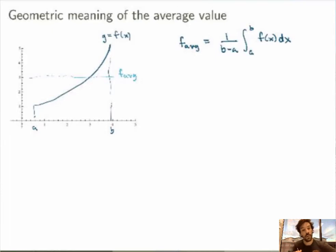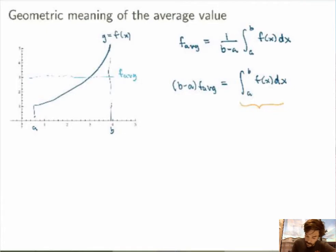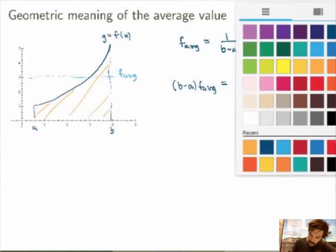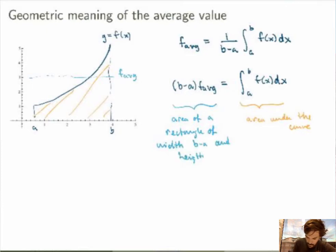But what does it mean geometrically? One way to understand it is to multiply both sides of this equation by b minus a. So I get that b minus a times f-average is equal to the integral from A to B of f of x dx. And then I can interpret both sides geometrically. Assuming f is a positive function, the right-hand side is the area under the curve. On the left-hand side, I have a different interpretation: this is the area of a rectangle of width b minus a and height f-average.